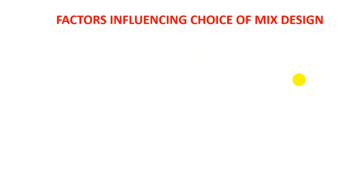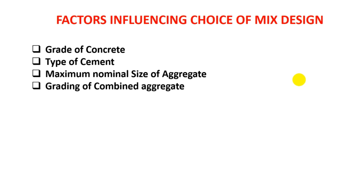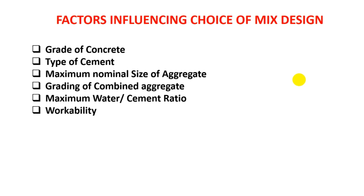First of all, we will see the topics that influence the design of concrete mix. These are: grade of concrete, types of cement, maximum nominal size of aggregate, grading of combined aggregate, maximum water cement ratio, workability, durability, and quality control. We have to focus on these topics when we work for concrete mix design. I will discuss each topic now.